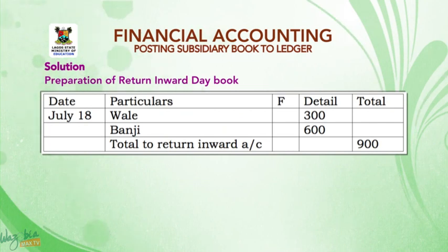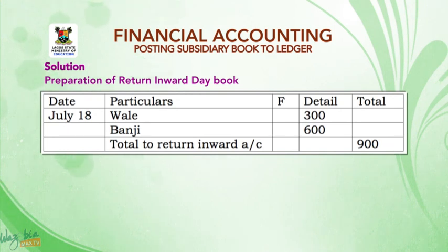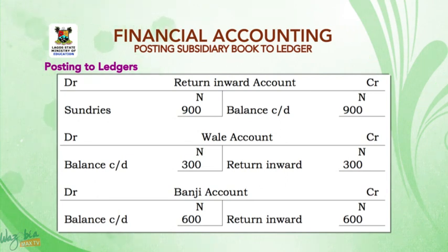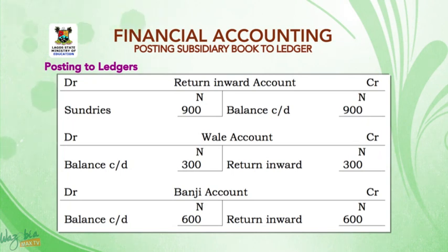Solution — preparation of return inward day book: five-column table of dates, particulars, folio, detail, and total. July 18: Wale 300; Banji 600; total to return inward account 900. Postings to ledger: the return inward account will be debited with sundries 900 and credited with balance carry down 900. Wale account credited with return inward 300, debit side balance carry down 300. Banji account: credit side return inward 600, debit side balance carry down 600.